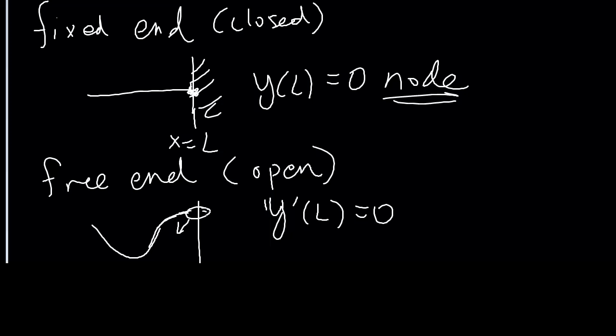Or you can look at it as this is always like a maximum displacement, so that's where the anti-node happens. And at the max and min, you know that the derivative is equal to zero. So those are your common boundary conditions.